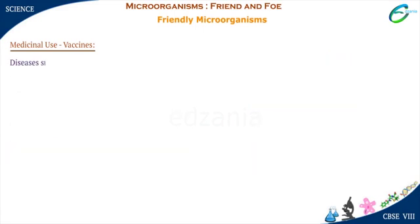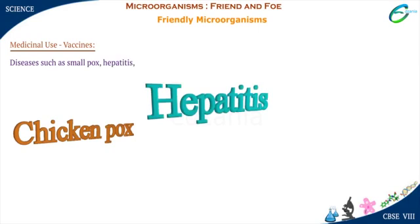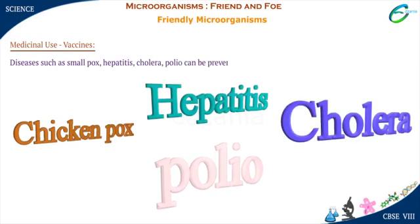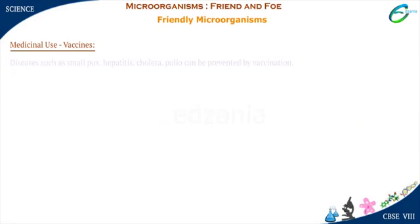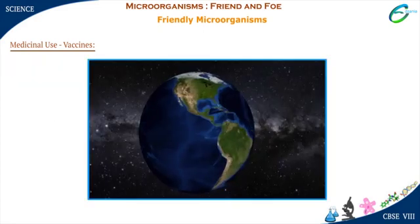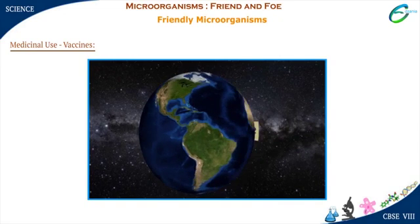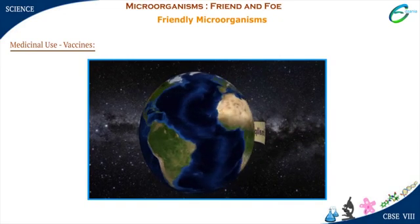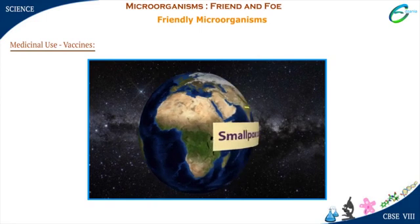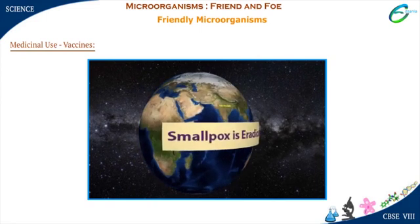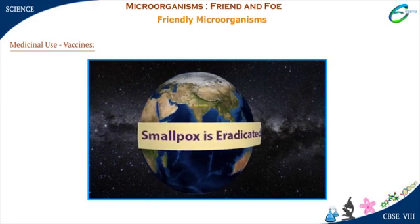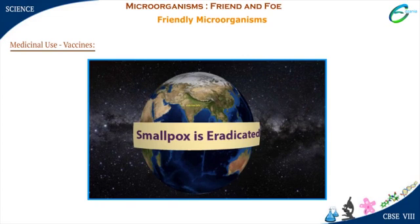Diseases such as smallpox, hepatitis, cholera, and polio can be prevented by vaccination. Smallpox has been completely eradicated because of the worldwide campaign against this disease. Polio is now eradicated from India. However, the Pulse Polio campaign is still run every year to sustain the polio eradication from the country.